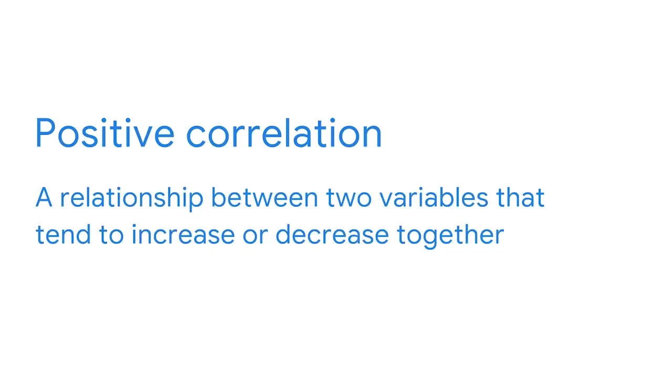The intercept would be the number of cake slices that are sold when zero cups of coffee are sold. When two variables, X and Y, are related in a linear way, we say they are correlated. Using statistics, we can actually calculate how strong the linear relationship between X and Y is. There are two kinds of correlation: positive and negative. Positive correlation is a relationship between two variables that tend to increase or decrease together. For example, as more cups of coffee are purchased, more cake slices are purchased.